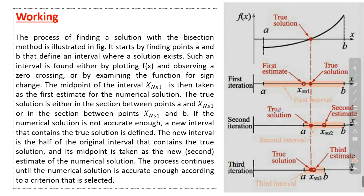For finding the numerical solution of a nonlinear equation, first we select the interval in which the solution exists by two ways: number one, by plotting f(x) and observing a zero crossing; number two, by examining the function for a sign change.